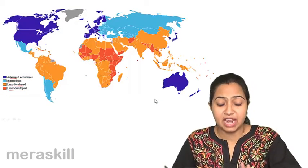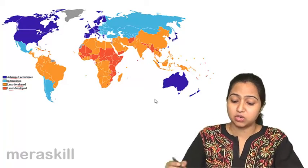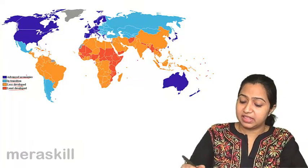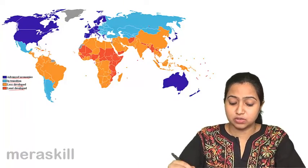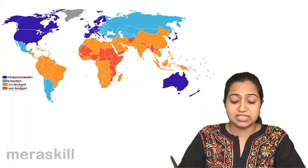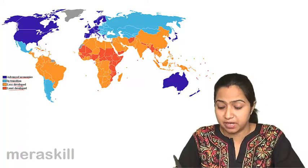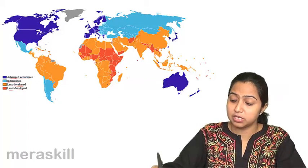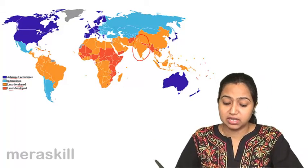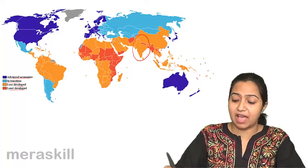Now, as you can see, they have been divided into four parts. They are advanced economies. And then there are the blue ones which are in transition, which were like the second world economies. The orange ones are the less developed economies or the developing nations in which India is a part. And the red ones are the least developed countries, the countries of Africa and all.